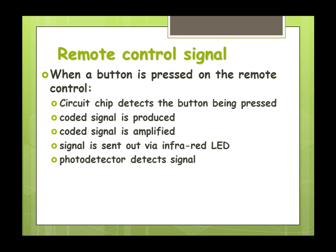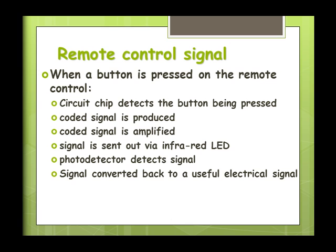Once it's been amplified, we then send that out via an infrared LED, which is usually what you can see at the top end of your remote control. At the other end on the TV, we've got a photodetector which detects the signal. We've got to get the signal first, and then it converts that signal back to a useful electrical signal, which the TV then responds to, changing the channel, turning the volume up, whatever it is exactly that we're doing.